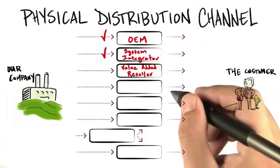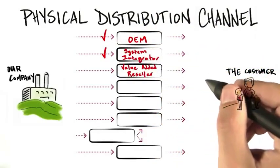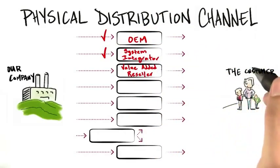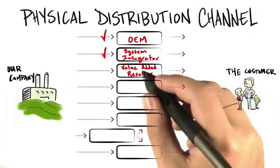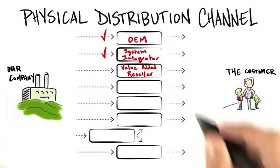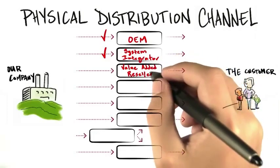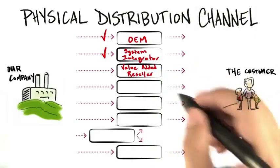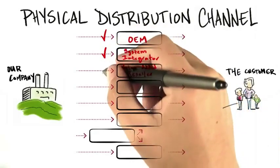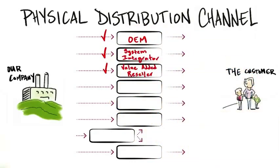A value added reseller might take a computer system, add other prepackaged software from third party vendors, add maybe some utilities of their own, and sell a turnkey solution to an end user. They build less complex systems with less value added than system integrators, but they could be great partners.